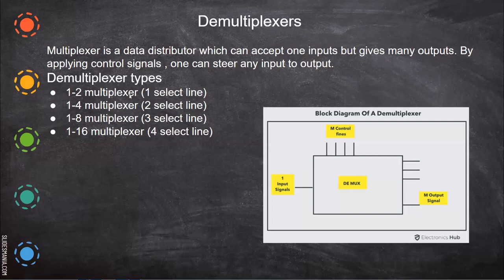For this 1-to-2 multiplexer, we need only one select line. 1-to-4, we need two select lines. 1-to-8, three select lines. 1-to-16, four select lines.